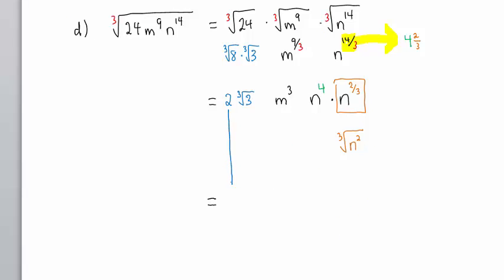Putting this all together, we have 2, m cubed, n to the 4th,